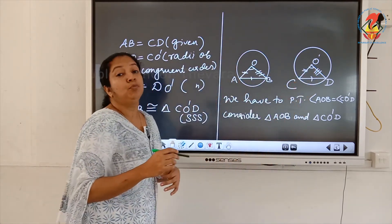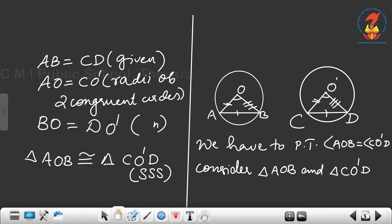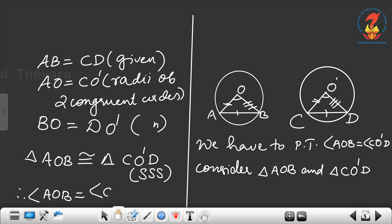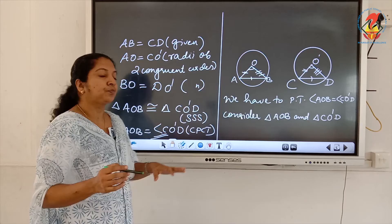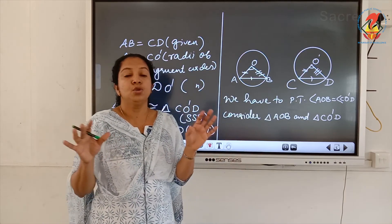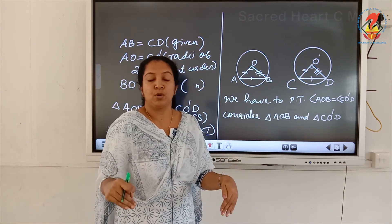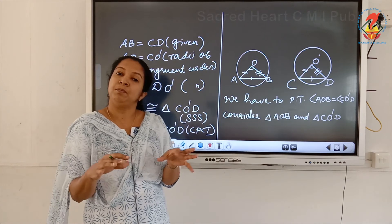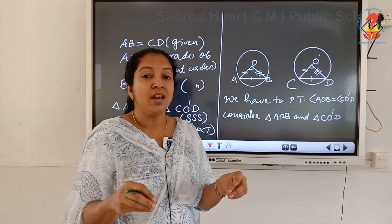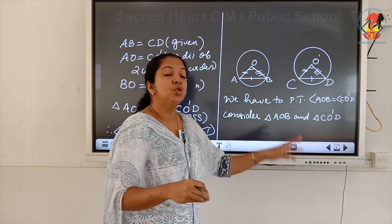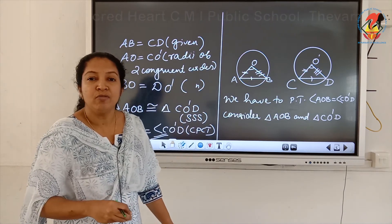Therefore, triangle AOB is congruent to triangle CO dash D by SSS criterion. So angle AOB equals angle CO dash D by CPCT. This proves that equal chords of congruent circles subtend equal angles at their centers.